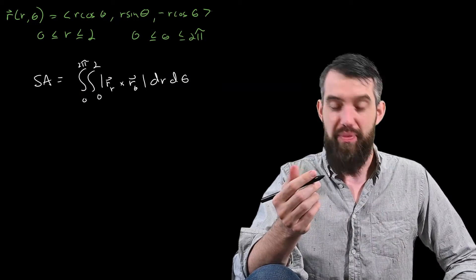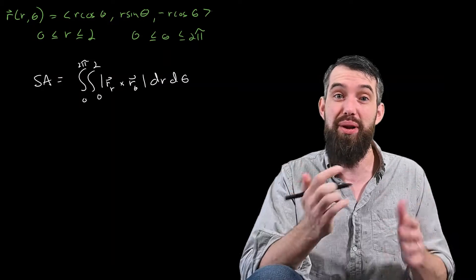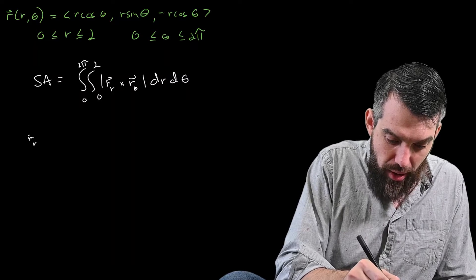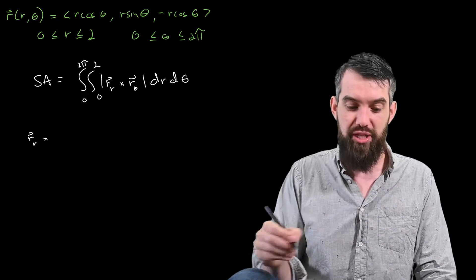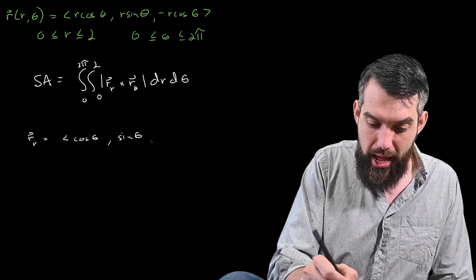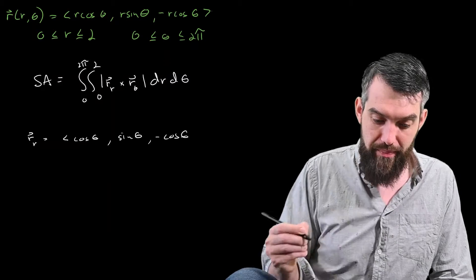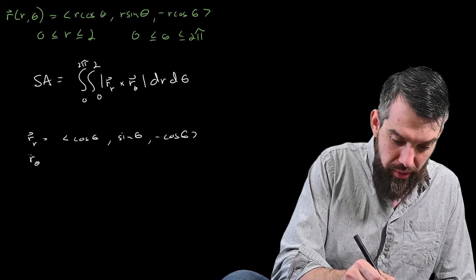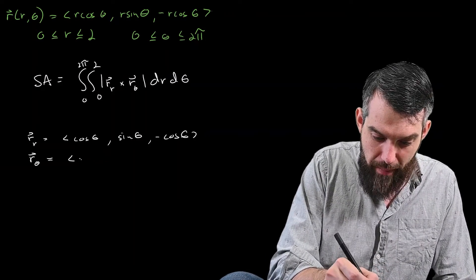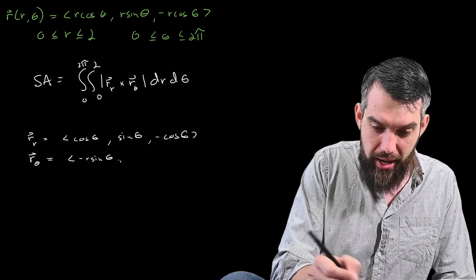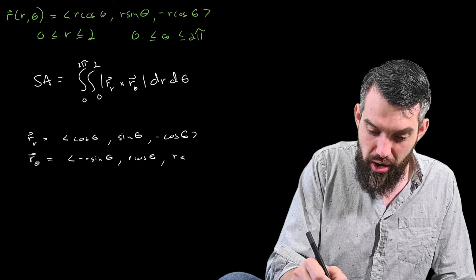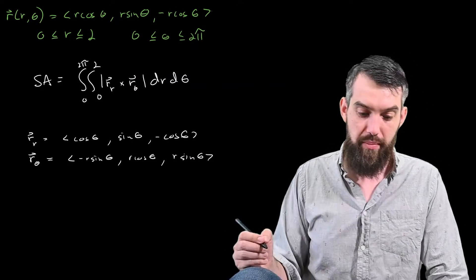So the main thing, because I've already got the limits of integration, that was easy, the main thing is figuring out this integrand. So how can I do this? Well, let's do some computations. The partial derivative of r with respect to r, so I see an r in each place, this is just going to be cosine of theta, sine of theta, and minus cosine of theta. The derivative with respect to theta is going to be, well, the derivative of r cosine is going to be minus r sine of theta, r cosine of theta, and r sine of theta.